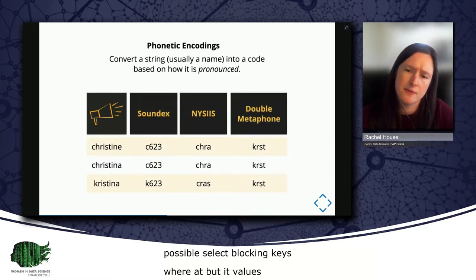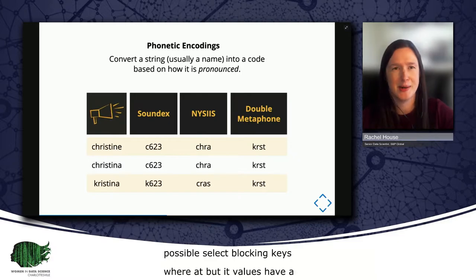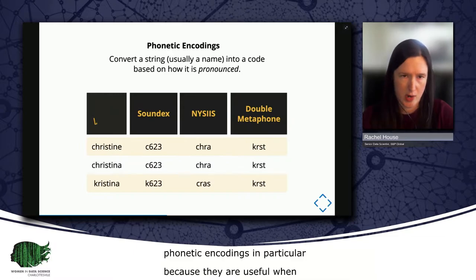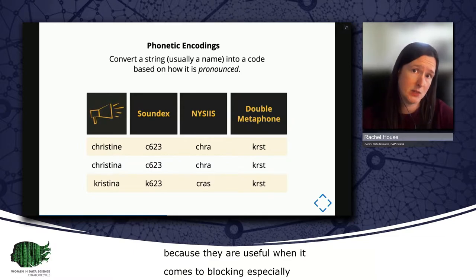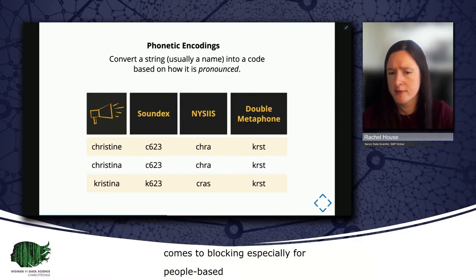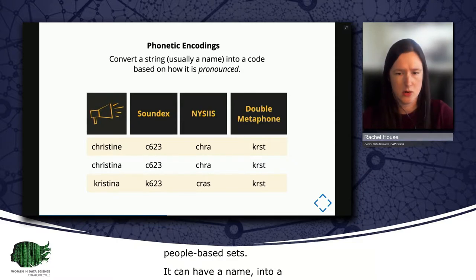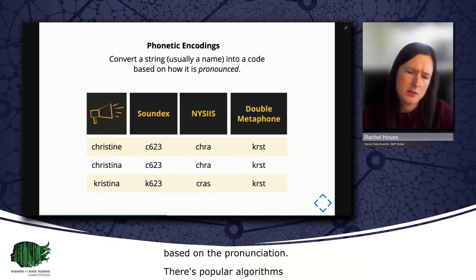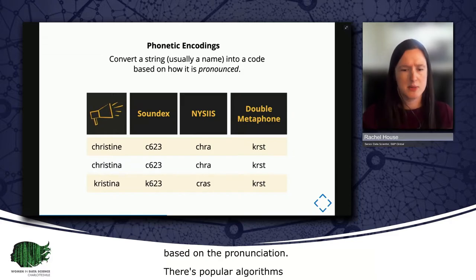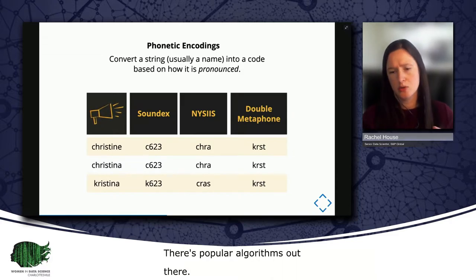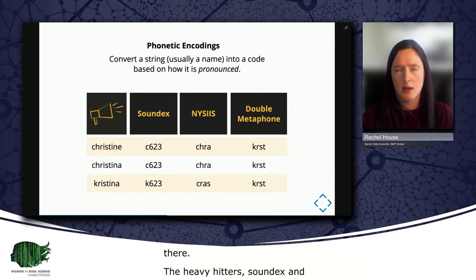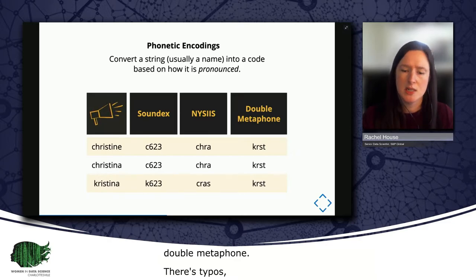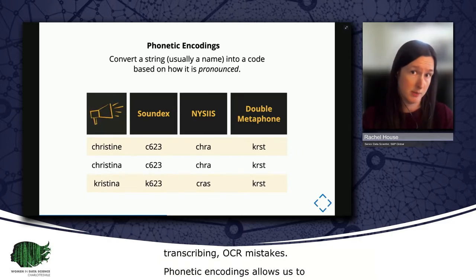And here, I'd like to mention phonetic encodings in particular, because they are very useful when it comes to blocking, especially for people datasets. A phonetic encoding converts a string, normally a name, into a code based on how it's pronounced. There are a number of established and popular algorithms out there. The heavy hitters you'll come across will include Soundex and NYSIIS and Double Metaphone. So there's a lot of opportunity for error in our common forms of data entry, like typos, incorrect transcribing, OCR mistakes. Phonetic encodings allow us to normalize the pronunciation of values, which can help to overcome data entry errors and typos during the blocking process.